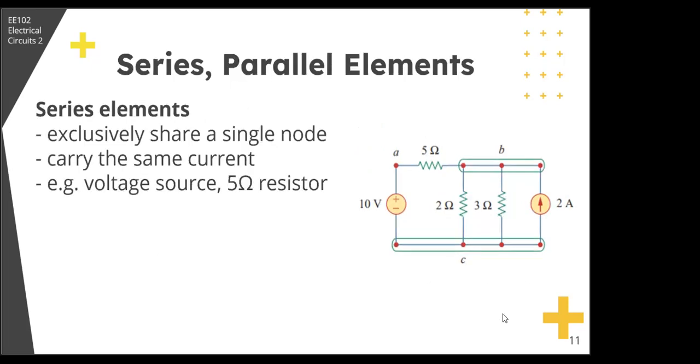Next, series and parallel elements. Elements are in series when they are chain connected, that is connected sequentially end to end, and no other element is connected to that common node. For example, series elements are the 10 volts and 5 ohm resistor. They are in series because they exclusively share the same node, node A, and the same current flows through 10 volts and 5 ohms.